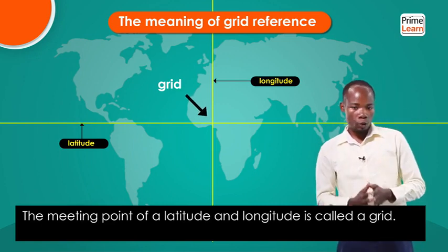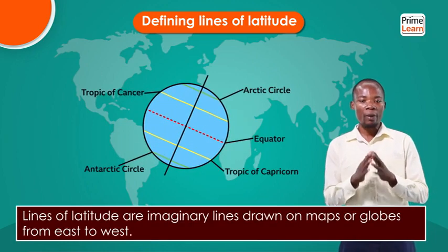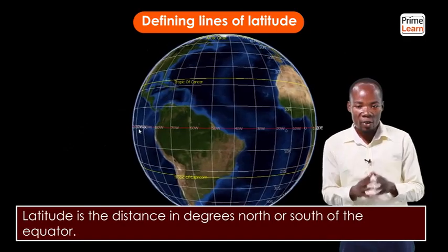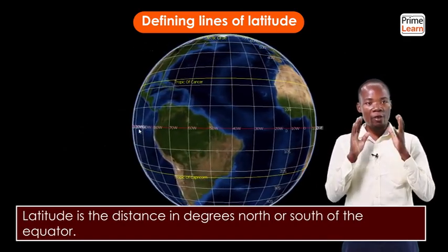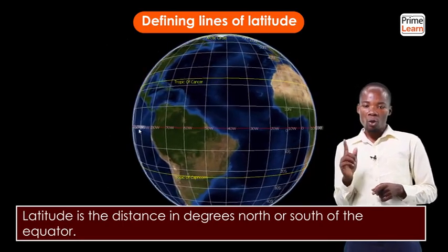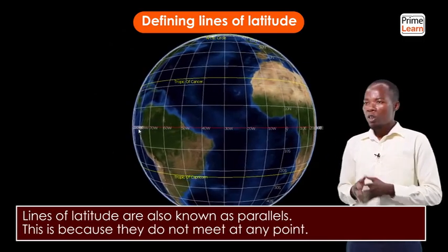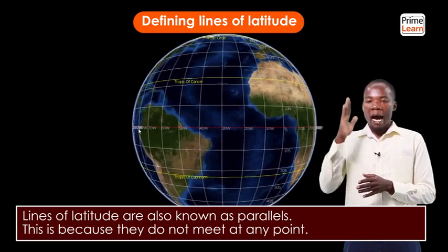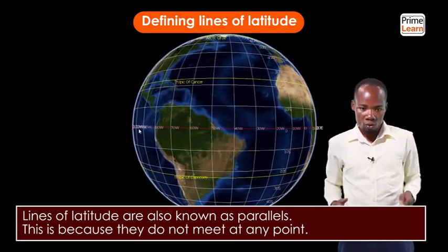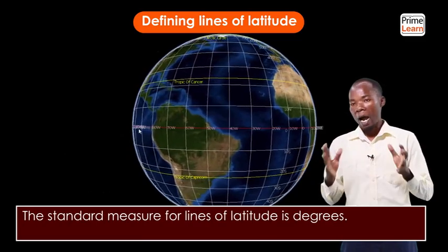Moving to competence number two: defining lines of latitude. Lines of latitude are imaginary lines drawn on maps or globes, running from east to west. Latitude is the distance in degrees north or south of the equator. Lines of latitude are also known as parallels, because they do not meet at any point when prolonged. The standard measure for lines of latitude is degrees.